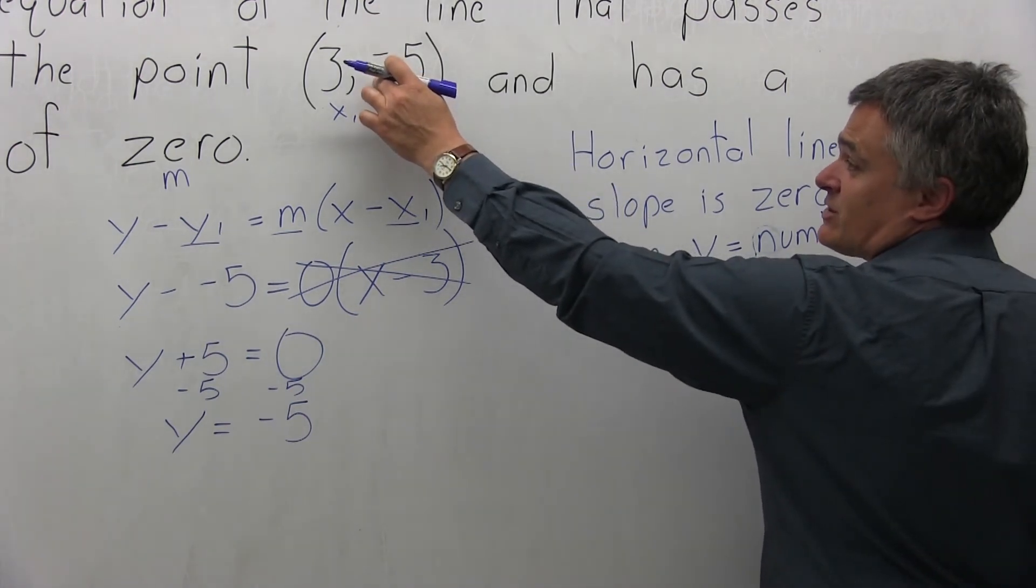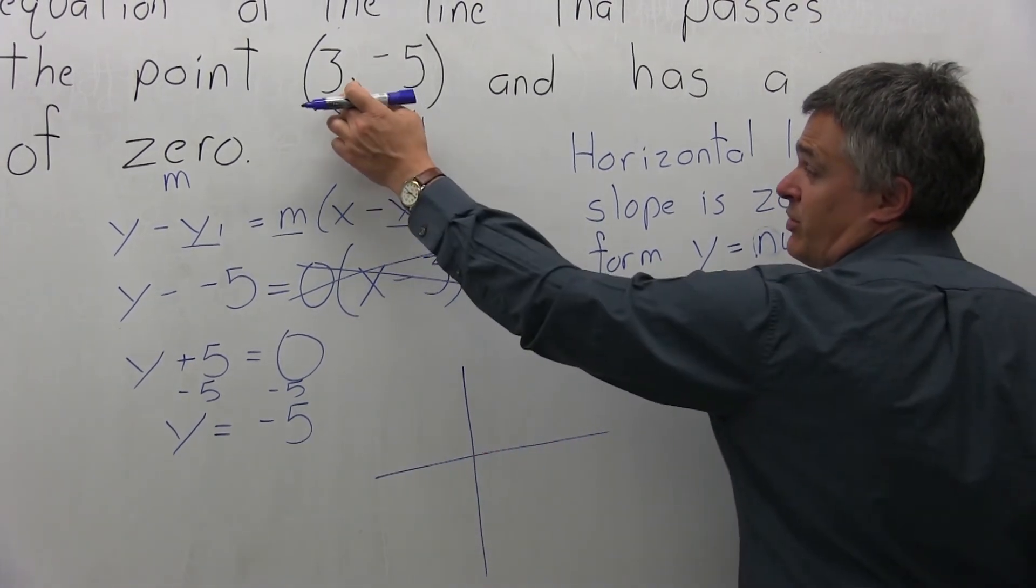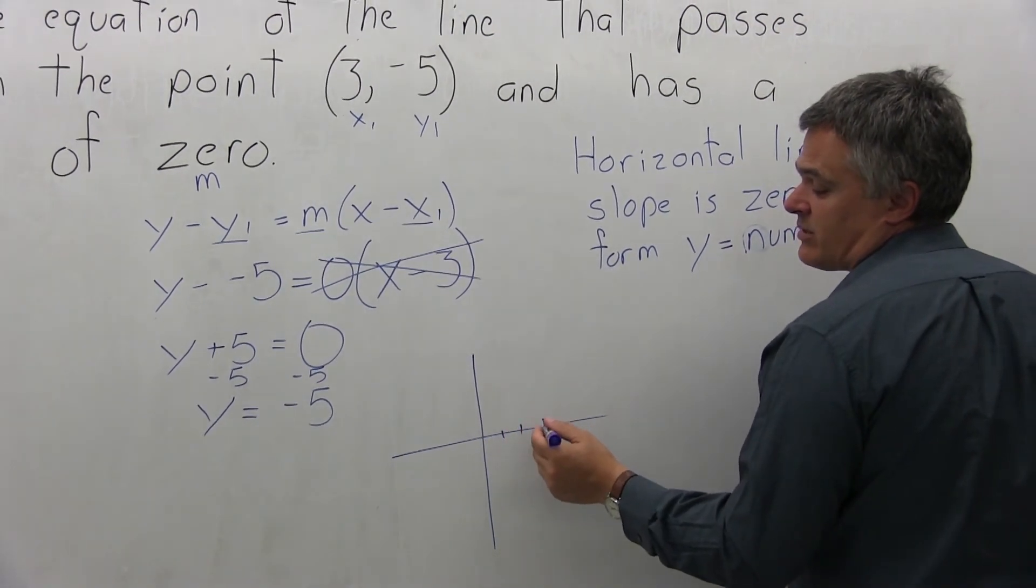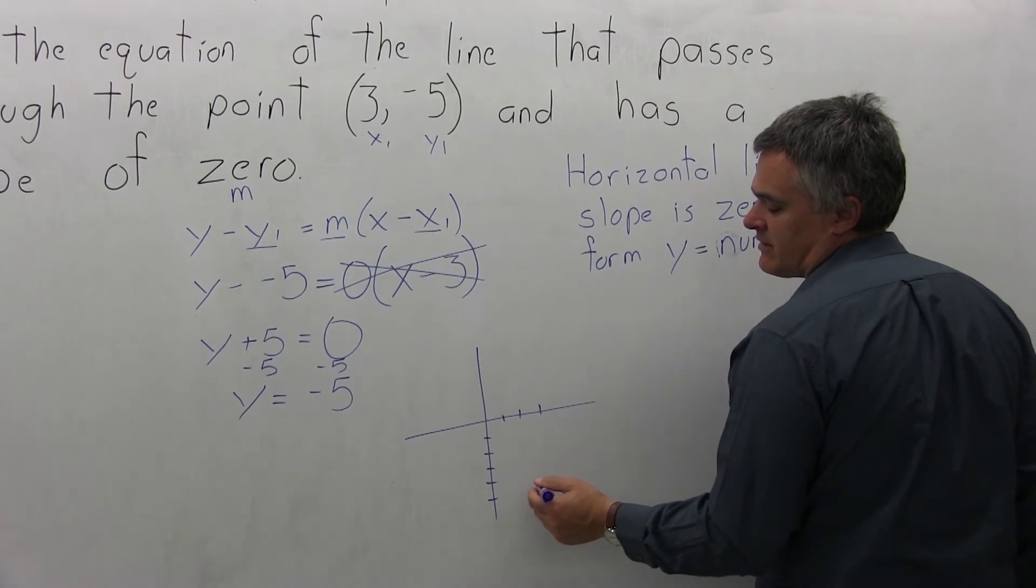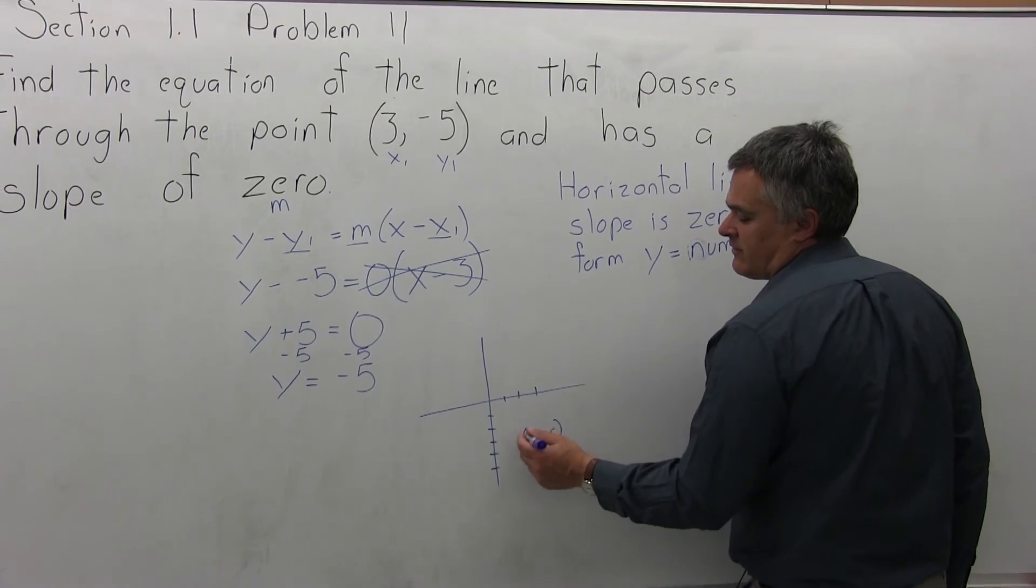They don't ask you to draw the graph, but you can draw a quick graph. The point that's given is (3, -5). If you go over 1, 2, 3, and down 1, 2, 3, 4, 5, you would have this point here, over 3, down 5.